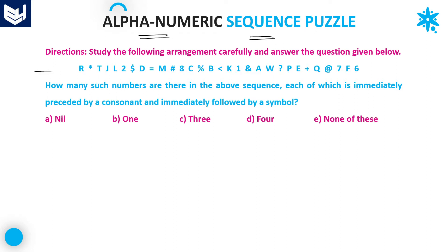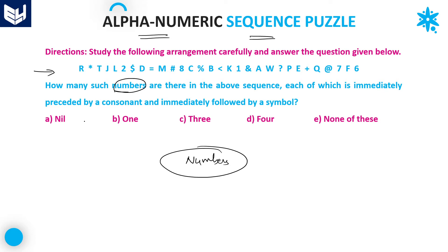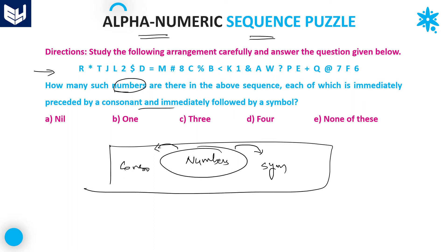See, what is the sequence given? The sequence consists of letters, symbols, as well as numbers. Let's see the first question: How many such numbers are there in the above sequence, each of which is immediately preceded by a consonant and immediately followed by a symbol? We have to find those numbers that satisfy this pattern.